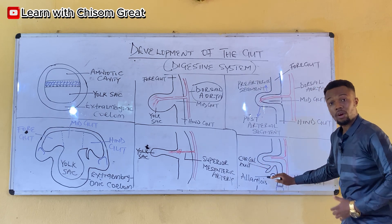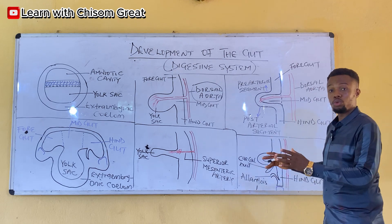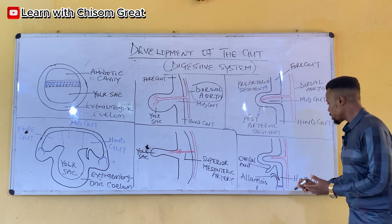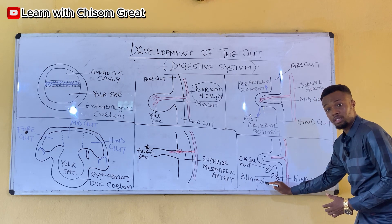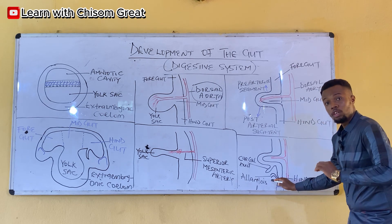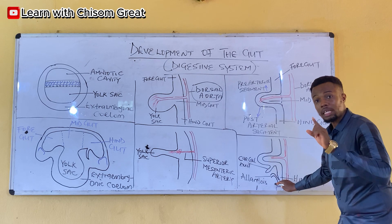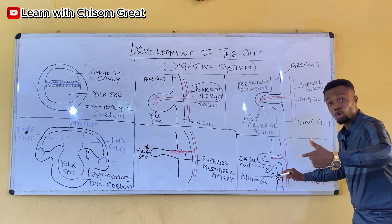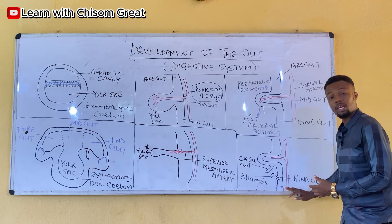The cecal bud gave rise to the cecum and also the vermiform appendix. Coming down to the hindgut, on the ventral aspect of the hindgut, there is an outgrowth known as the allantoic diverticulum. This allantoic diverticulum begins to elongate, going deeper into the ventral aspect of the hindgut.